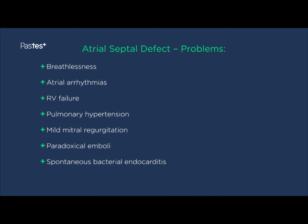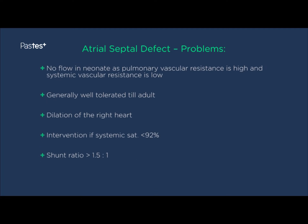By far and away, the most common presentation of an atrial septal defect is with breathlessness. Other problems include atrial arrhythmias, right ventricular failure as the right ventricle expands under increased volume and pressure load, pulmonary hypertension, mild mitral regurgitation, paradoxical emboli — where small blood clots travel from the right side through the defect into the left side and then up to the brain or systemic organs — or spontaneous bacterial endocarditis, as bacteria can colonize the abnormal endothelial surface.